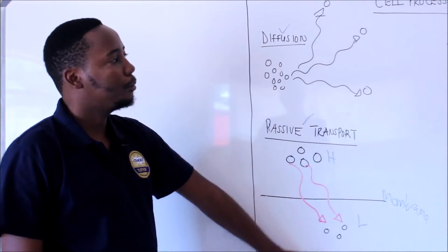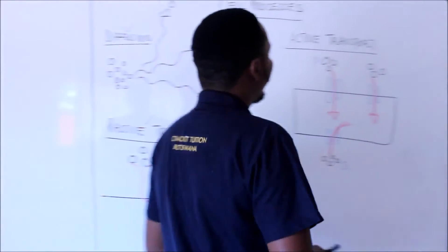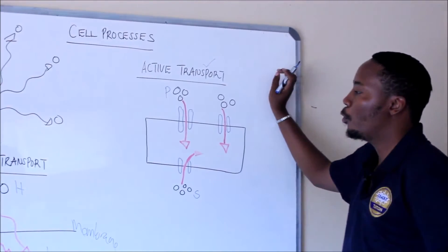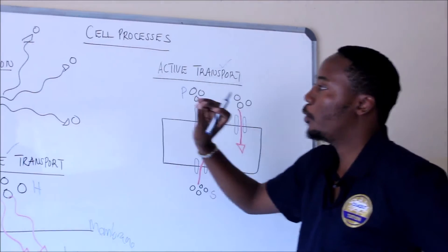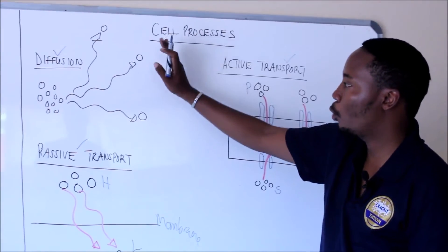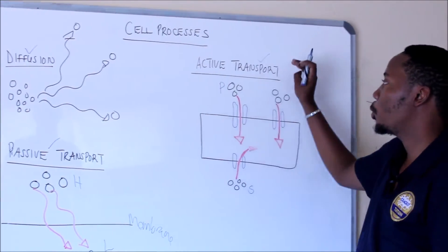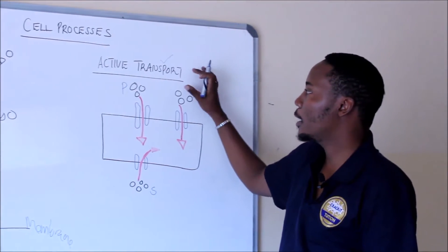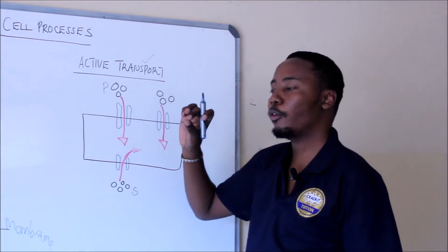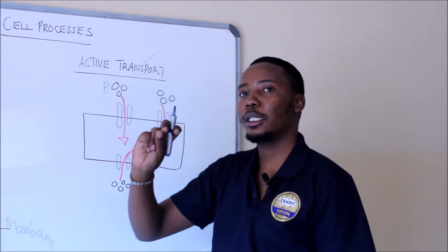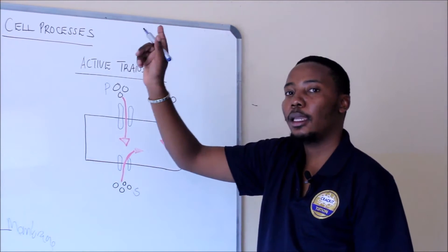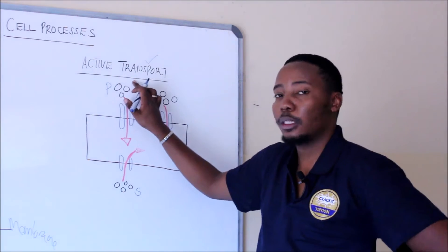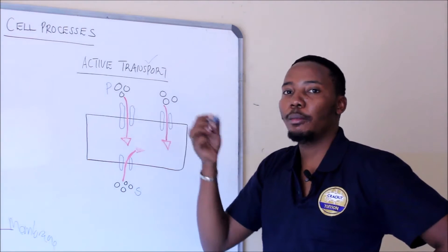Carbon dioxide will move from where it is at a high concentration, cross the walls of the alveoli, to where it is at a low concentration. The third form of transport is what we call active transport. In the two previous processes, molecules move from where they are high to where they are low, but in active transport we have a different case — molecules move from where they are at a low concentration to where they are at a high concentration, against their concentration gradient.